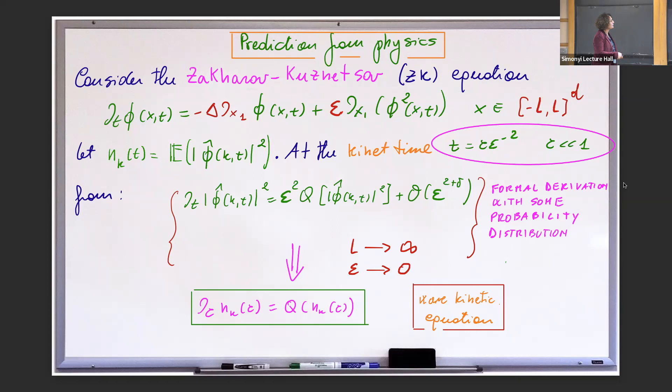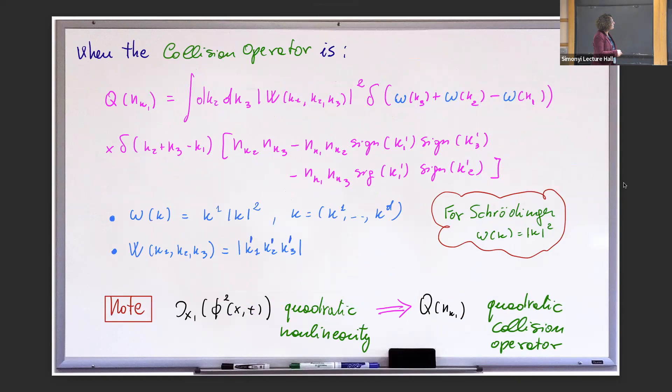In particular, Q is going to have a quadratic form because we have a quadratic nonlinearity. If you have a Schrödinger equation, you will see three functions. The collision operator has the following form: you have two functions here corresponding to the quadratic nonlinearity. Then this delta tells that the wave is on frequency K1, so waves K2 and K3 are linked to K1 such that K1 equals K2 plus K3.